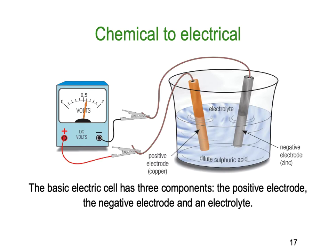The next one is chemical — typically batteries and cells. The basic electric cell has three components: the positive electrode, the negative electrode, and the electrolyte. In this particular case, the electrolyte is diluted sulfuric acid, the positive electrode is a piece of copper, and the negative electrode is a piece of zinc. The chemical reactions between those will produce a small potential difference and therefore some current.